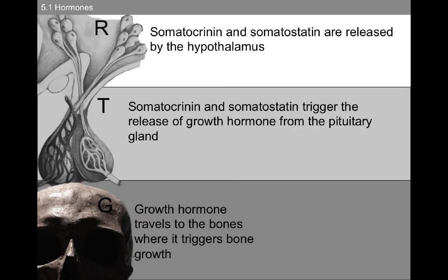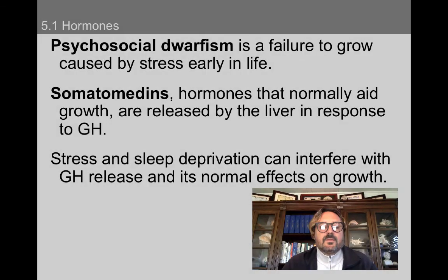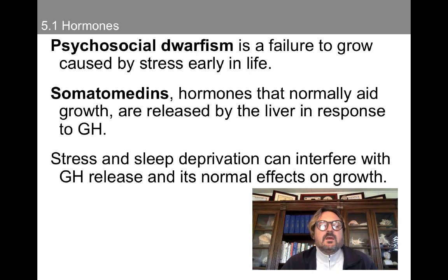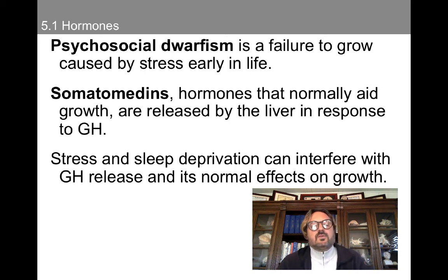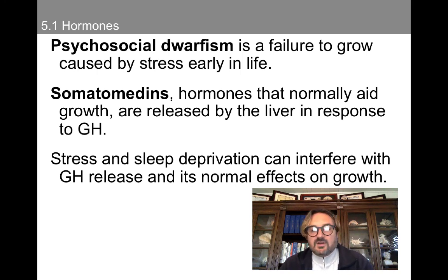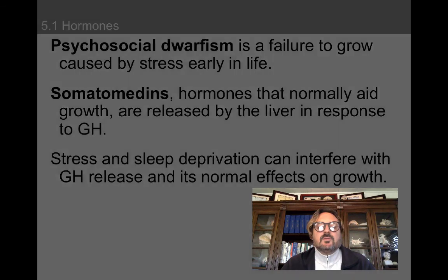Growth hormone: somatocrinin and somatostatin are released by the hypothalamus, triggering the release of growth hormone from the pituitary gland. Growth hormone then travels to the bones where it triggers bone growth. Psychosocial dwarfism is a failure to grow which is caused by stress early in life. The somatomedins are hormones that normally aid growth and are released by the liver in response to growth hormone. Research shows that stress and sleep deprivation can interfere with growth hormone release and its normal effects on growth.